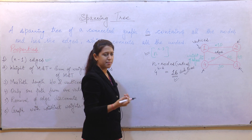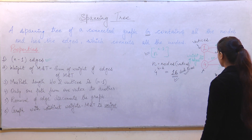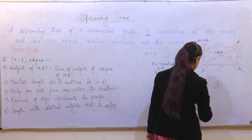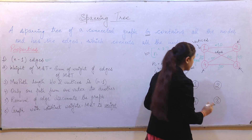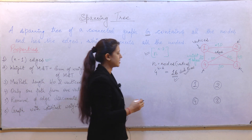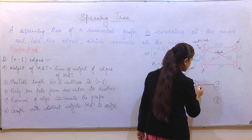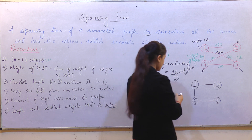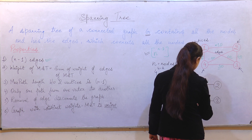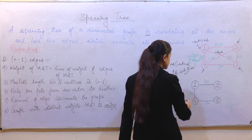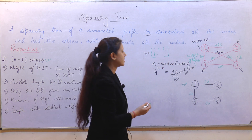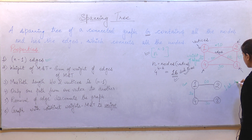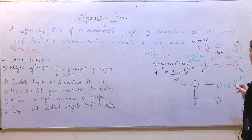Let's first create a skeleton of this spanning tree. A skeleton is a tree which contains only vertices but not edges. We have created a skeleton and are now taking edges to connect these vertices. We have taken three edges with weights 10, 20, and 30 — this is our first sub-tree created from the original spanning tree.